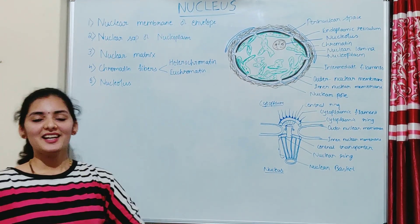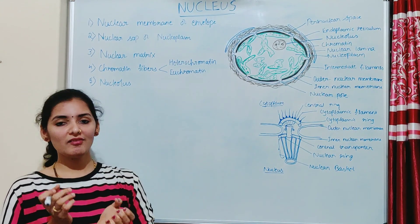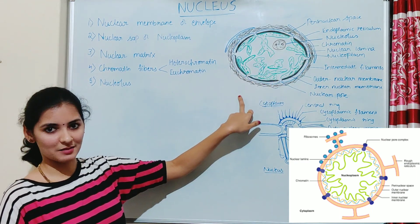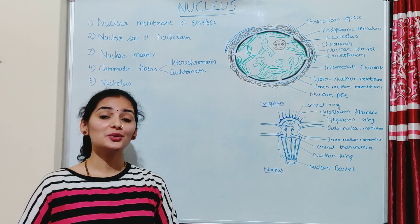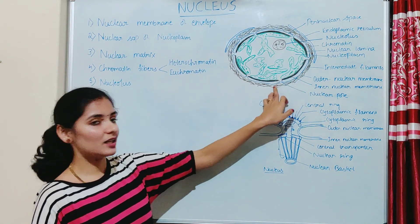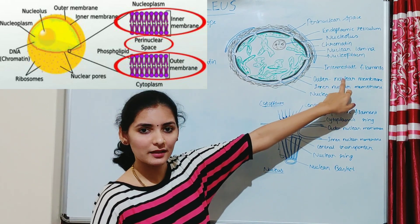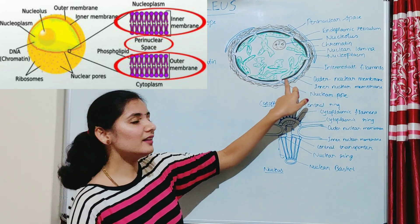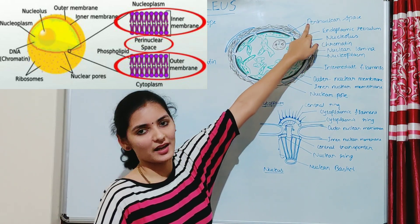The first part is the nuclear membrane, also known as the karyotheca or nuclear envelope. As the name indicates, the nuclear envelope envelops the DNA and separates it from the cytoplasm. This nuclear membrane is structurally similar to the plasma membrane. It is made of two unit membranes: the outer nuclear membrane and the inner nuclear membrane. In between these two membranes, a space is present known as the perinuclear space.